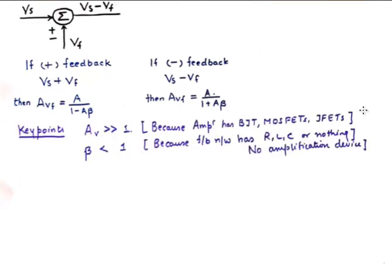Now let's look into the significance of this formula. We know that the gain of the amplifier A is going to be very, very large. Greater than 1 because amplifier has BJT, MOSFETs and JFETs. So this is point number 1, key point number 1.